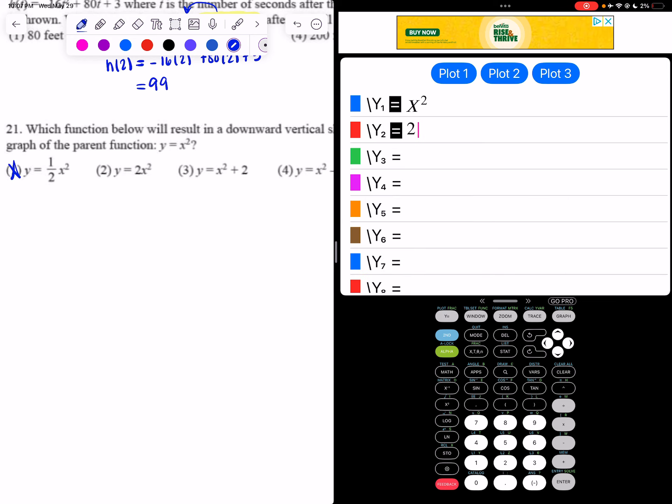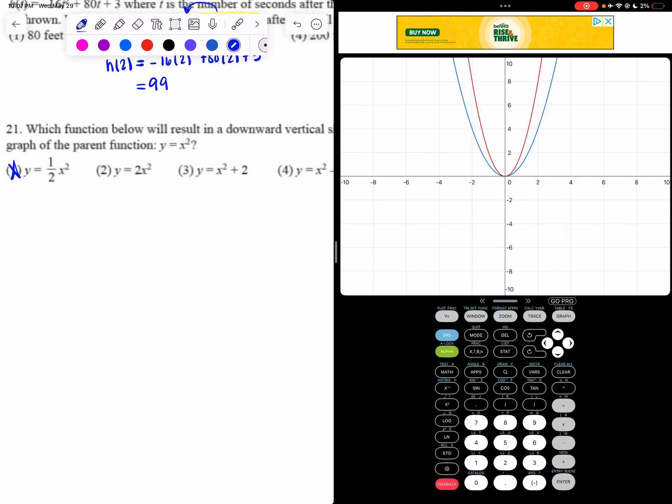I'm going to clear y2, and now type in choice 2, and then hit graph. Can't be that one either, because now the graph is getting narrower.